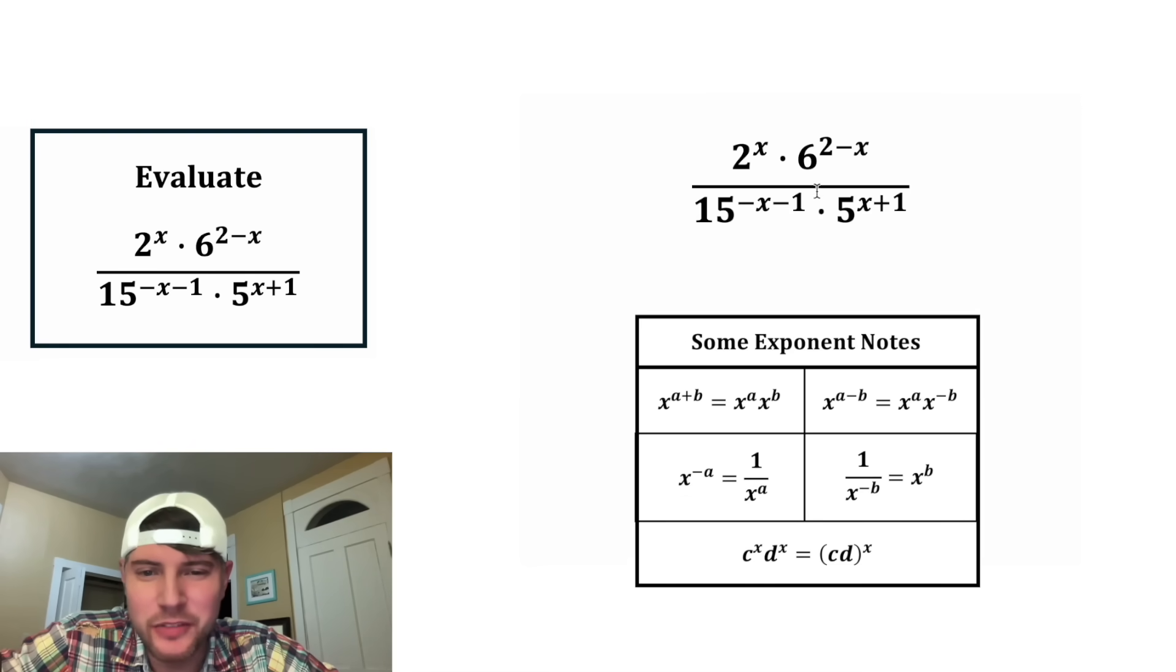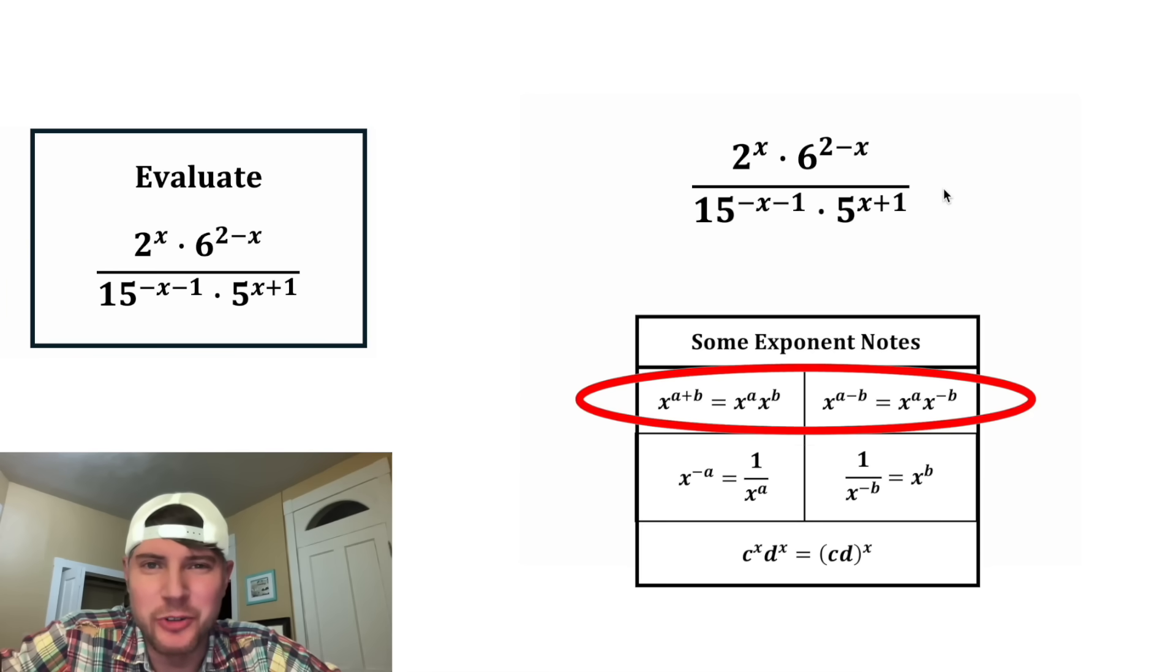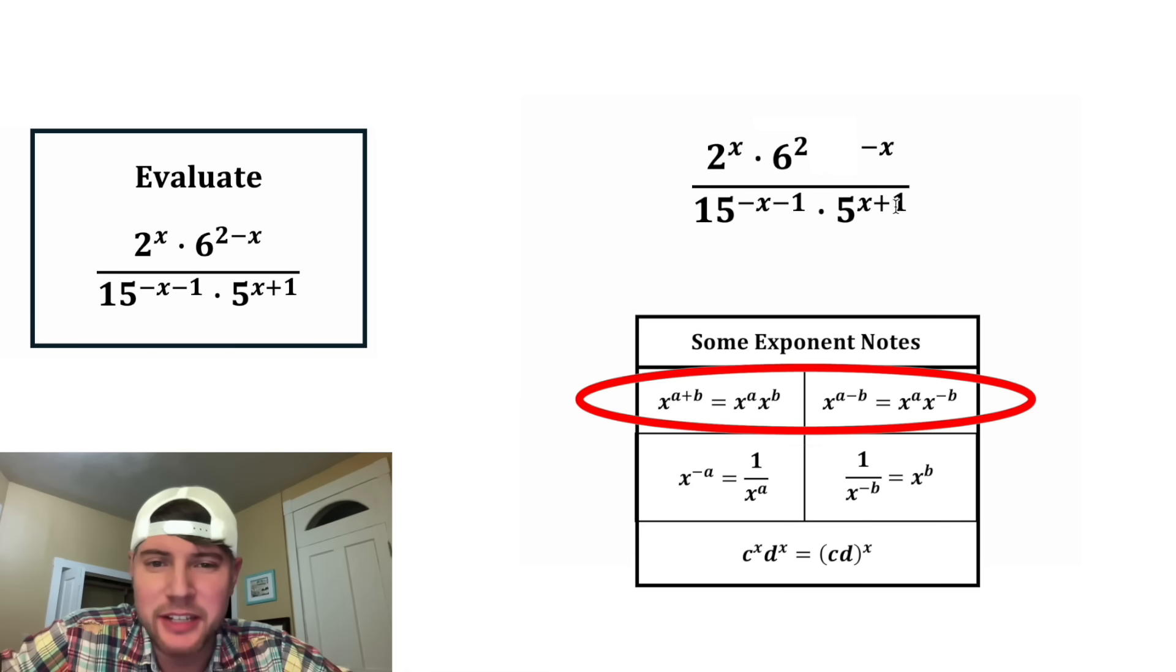First, let's deal with all of these exponents that have pluses and minuses. Here's the notes for those right here. If you ever have x to the a minus b, you can rewrite it as x to the a times x to the negative b. So here for the 6 to the 2 minus x, we can rewrite that as 6 to the 2 times 6 to the negative x.